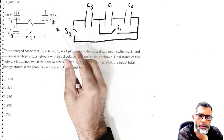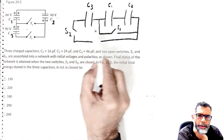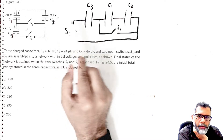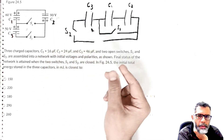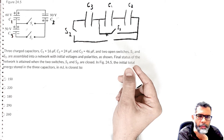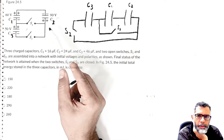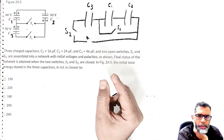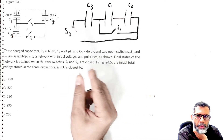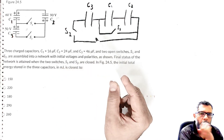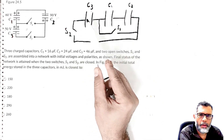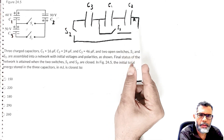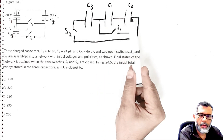I just redrew the same diagram, completely equivalent to the original picture. You can follow all the lines and wires, and you will see that this is nothing but equivalent to this one. So, as long as you just keep the switches open, these three capacitors are going to be connected in parallel.